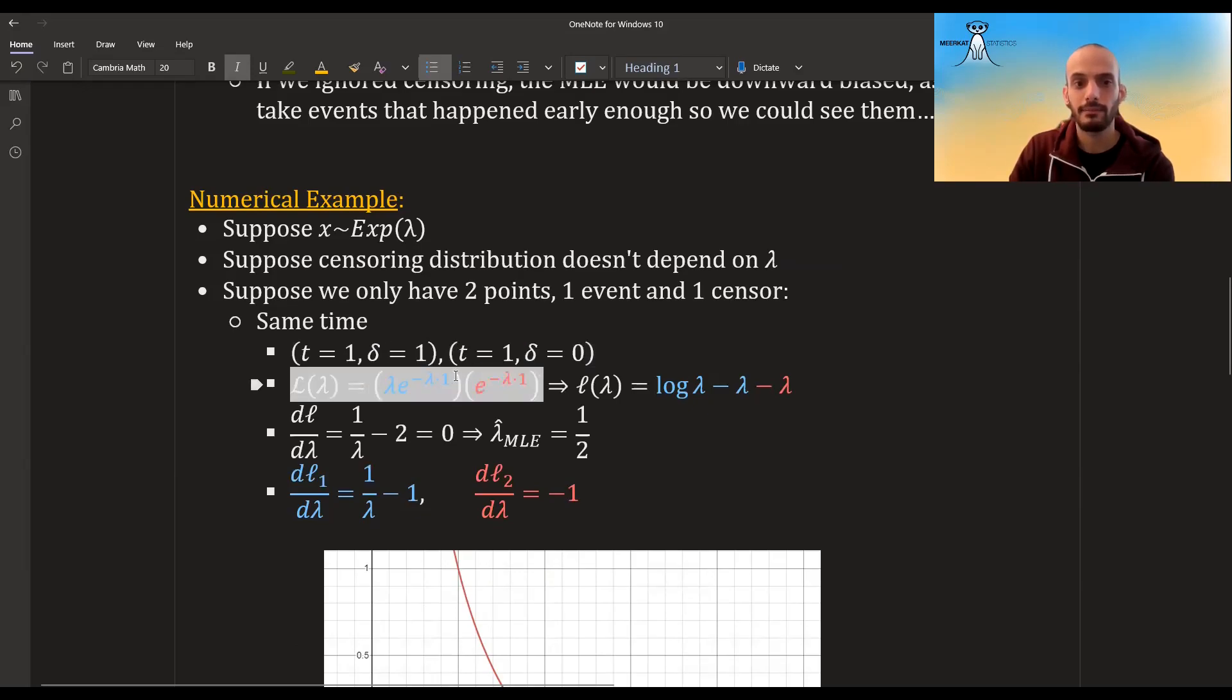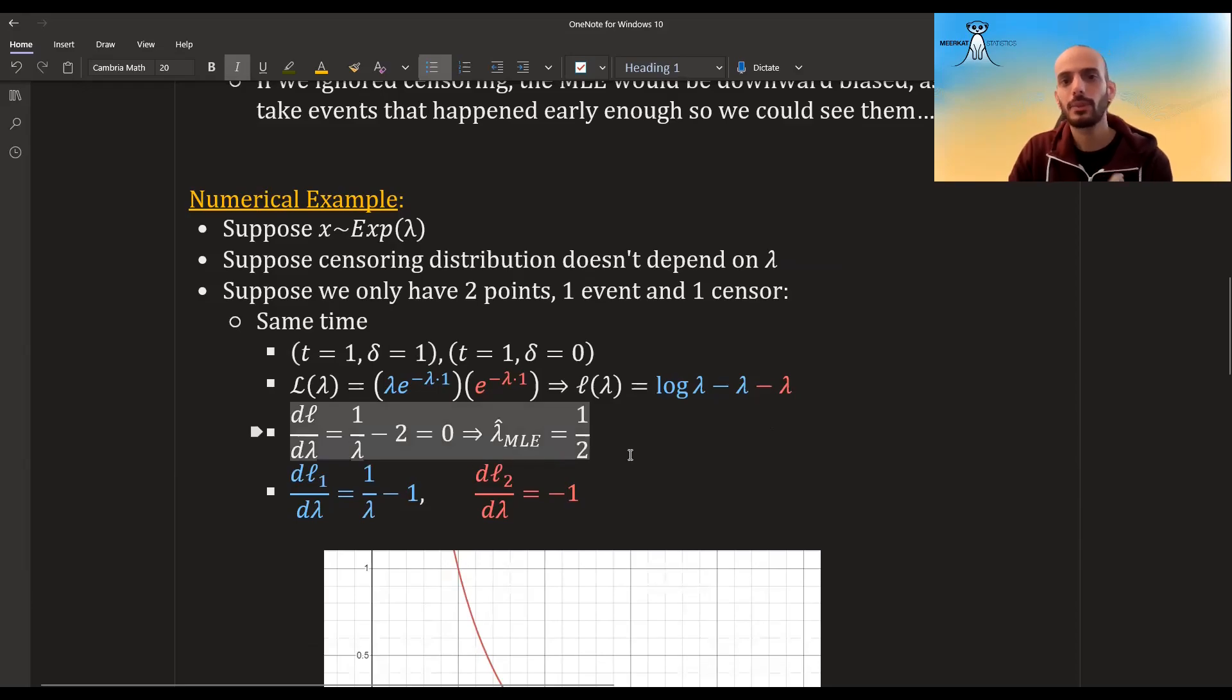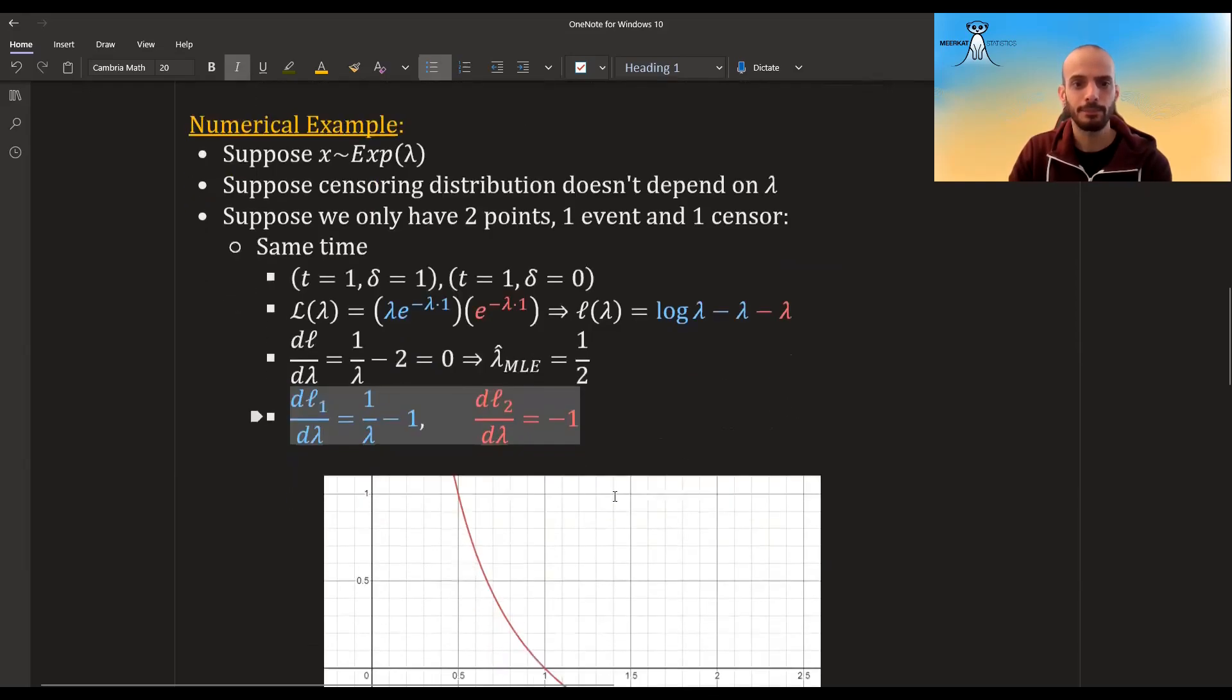So if we calculate the likelihood, it's like this. If we calculate the log likelihood, it's like this, and I am specifically separating the blue and the red. The blue is for the PDF, and the red is for the survival function. If we do maximum likelihood, we already see that the MLE is half, but let's see what happens. What is the role of each one of these guys? The blue and the red. So if we just differentiate with regards to the blue, we get this thing over here. This is the gradient. And if we just differentiate the red, we get minus one.